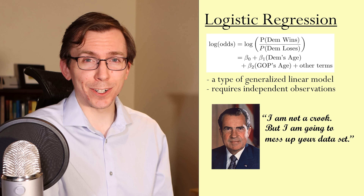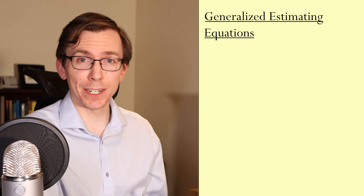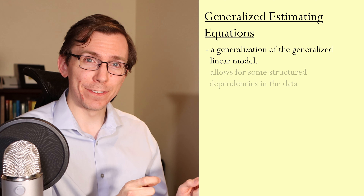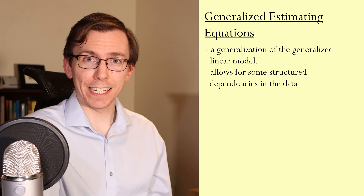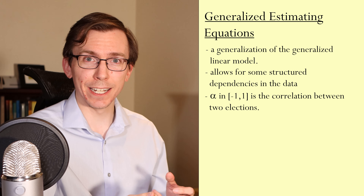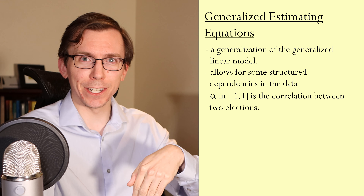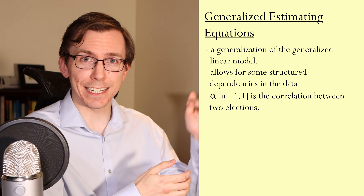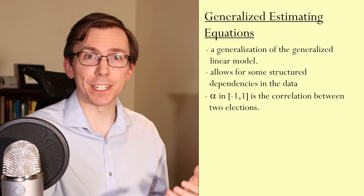That leads us to a new technique called the generalized estimating equation. Generalized estimating equations allow us to fit generalized linear models — such as logistic regression, Poisson regression, or standard linear regression — but with the added handling of dependencies in the data, giving us a much more powerful tool. We assume that if a candidate appeared in more than one election, then the outcomes of those elections will have some correlation — a number between minus one and plus one. If it's close to minus one, a success in the first leads to a failure in the next, or vice versa. If the correlation is close to one, success begets success and failure begets failure. This gives us an additional parameter in our model that we can estimate.